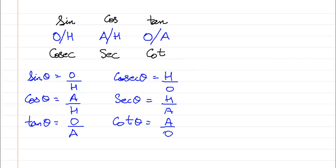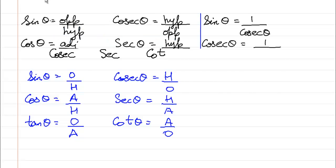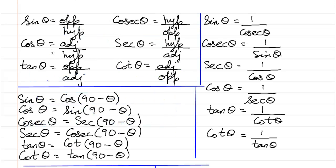Now let's move further and learn other formulas. For example, sin theta is equal to cos of (90 minus theta), cos theta is sin of (90 minus theta), and so on. Also, sin theta is equal to one upon cosec theta, cosec theta is equal to one upon sin theta, sec theta is equal to one upon cos theta, and cos theta is equal to one upon sec theta.